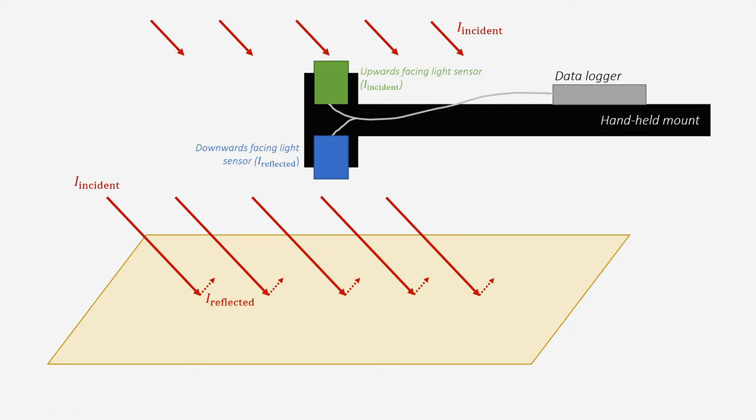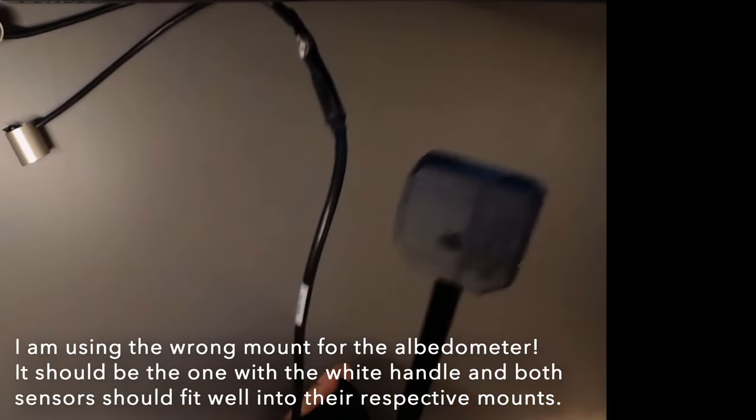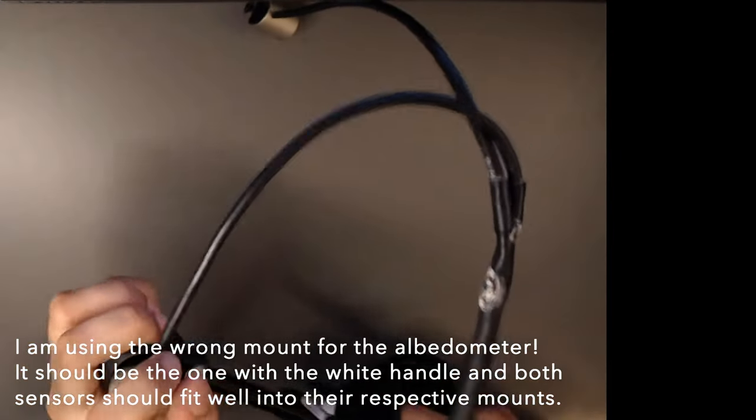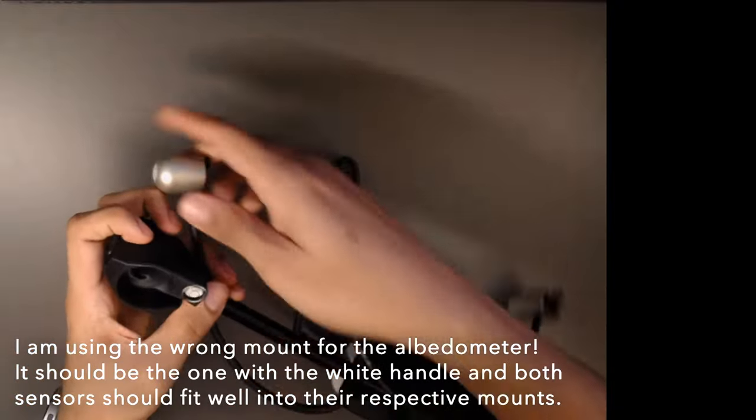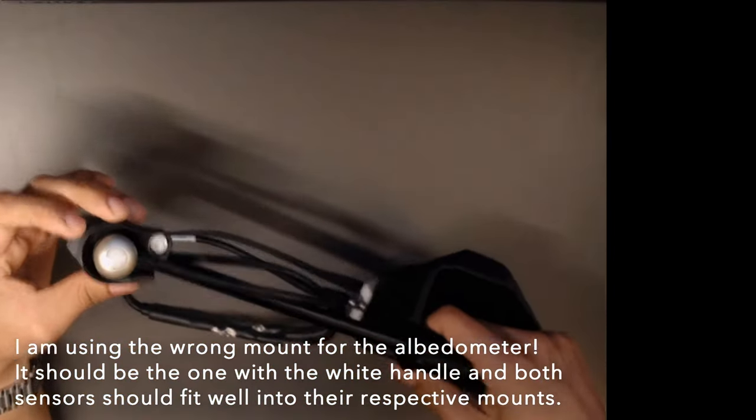Now, let's go ahead and configure the albedometer. The albedometer measures albedo, which is a ratio of the reflected light intensity to the incident light intensity on the surface. Essentially, it measures how well an object reflects light and thermal radiation. It measures this via two sensors, an upward facing and a downwards facing light intensity sensor. The upwards facing sensor is always the one with the plastic diffuser to enable light to enter from a large range of angles. Let's go ahead and configure this to our data logger and attach it to our handheld mount.